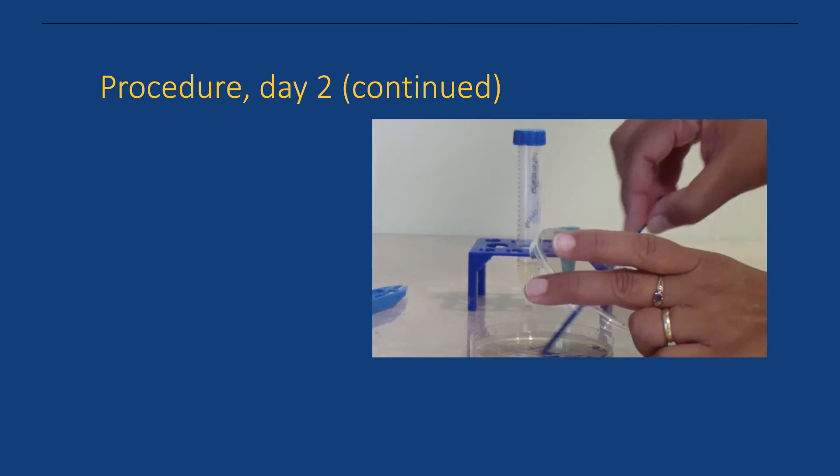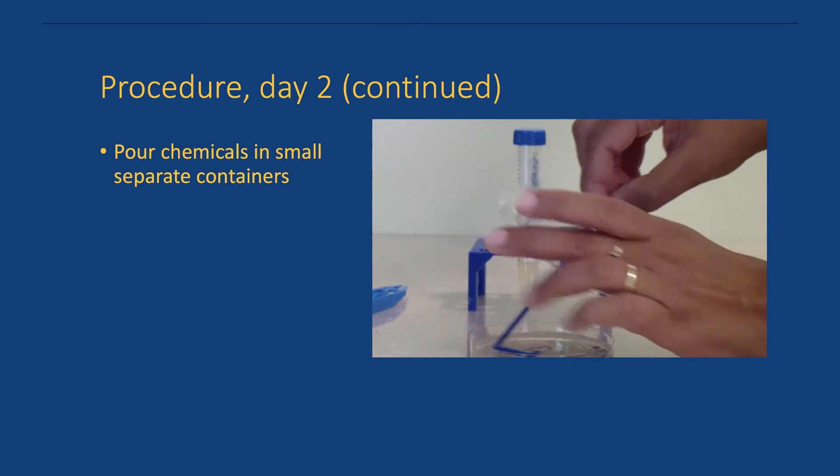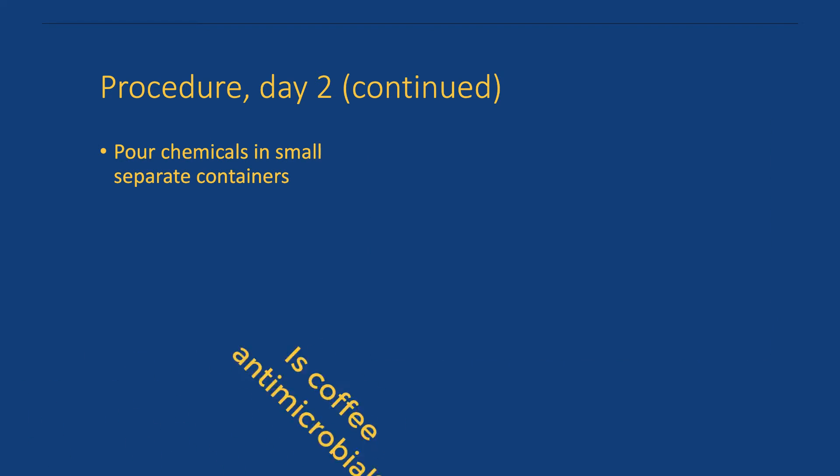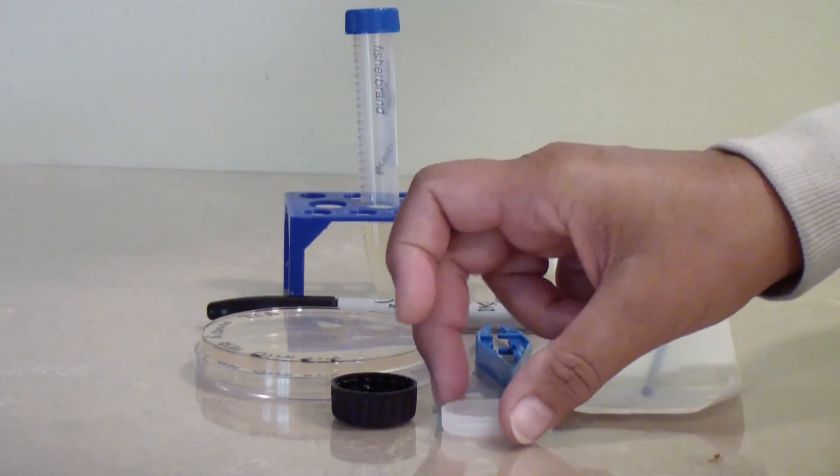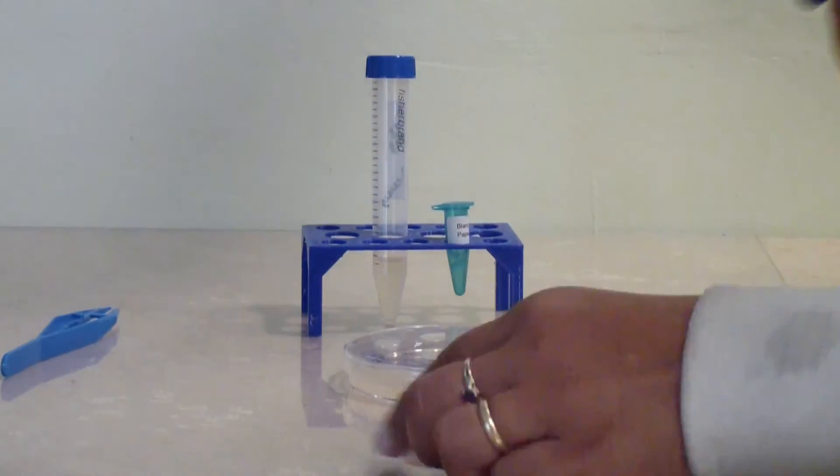Select the household chemicals that you would like to use. A student once told me that they had read that coffee had antimicrobial properties, so I wanted to try that out. I rinsed out old bottle caps to put a small amount of the chemicals I wanted to test in.